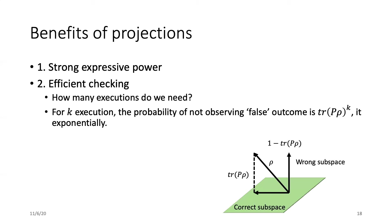So the key question about checking efficiency is that how many executions do we need? We believe that the number is small. From basic quantum mechanics, we know that the probability of observing the true outcome is trace(Pρ). So suppose we repeat this checking procedure k times, the probability that we do not observe any false outcome is trace(Pρ) to the power of k. And if trace(Pρ) is not one, this probability will decay exponentially and we expect to see a false outcome very quickly.